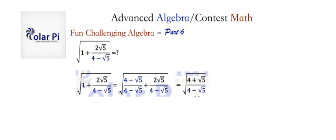Now, when we have something like 4 minus root 5, we like multiplying by the conjugate to get rid of square roots in the denominator, right? And the conjugate of 4 minus root 5 is 4 plus root 5.